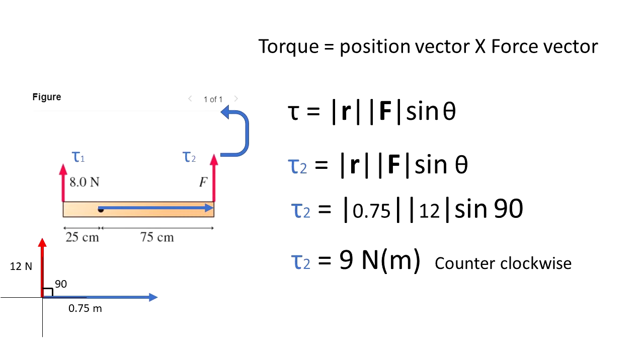This means that that force tends the object to rotate in the counter-clockwise direction. Actually, torque, if the position vector is in the x direction and the force is in the y direction, the torque is in the positive z direction. That means torque is going out of the page. But for convenience, we can say that it is counter-clockwise.